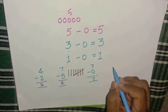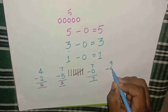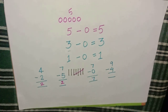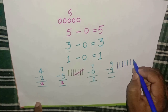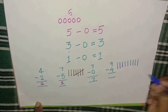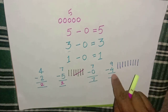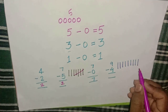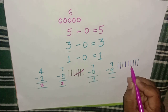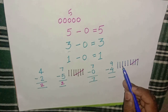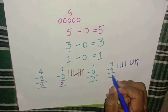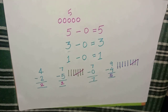Moving on to nine minus four. Let's do this with lines. Draw nine lines: one, two, three, four, five, six, seven, eight, nine. Cancel four lines: one, two, three, four. After cancelling, how many lines are left? One, two, three, four, five — the answer is five.